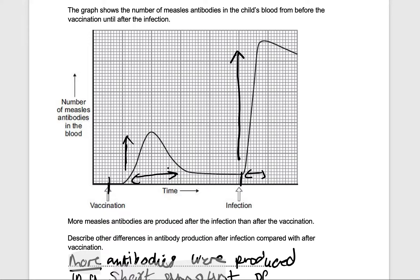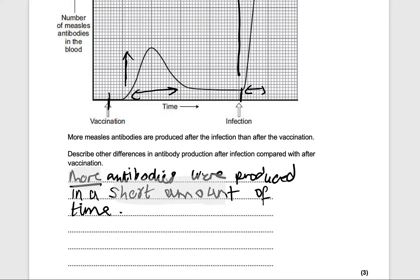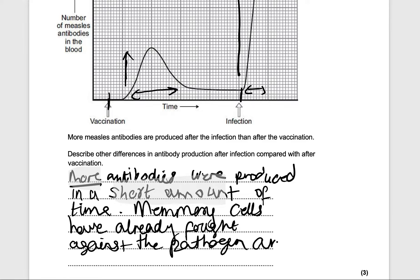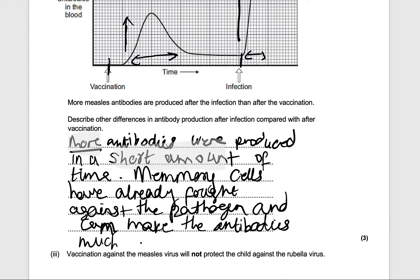After the vaccination the antibodies produced were fewer than after the infection. This is because the memory cells have already fought against the pathogen and can make the antibodies much faster. That will get you three marks.